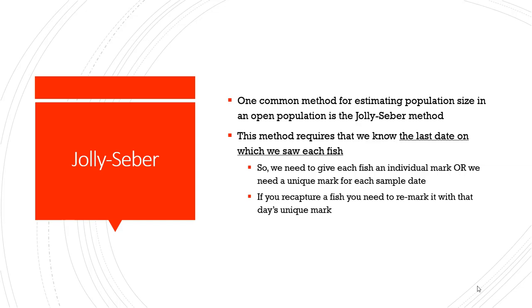A very common method for estimating population size in open populations is called the Jolly-Seber method, and that's what we're going to look at today.